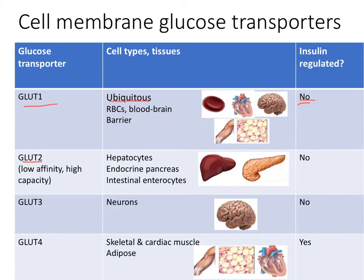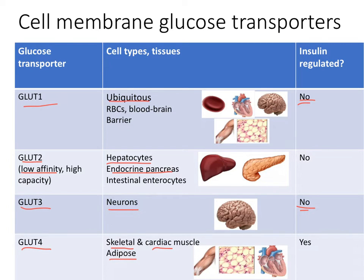GLUT2 is particularly expressed in cell types that are important for regulating blood glucose, such as hepatocytes, the endocrine pancreas like pancreatic beta cells, as well as the intestinal enterocytes. It has a low affinity for glucose, meaning that only when blood glucose levels are very high do large amounts of glucose enter these cell types. GLUT3 is specific to neurons — sperm also have GLUT3 — and again, this is not insulin regulated. GLUT4 is specific for skeletal muscle, cardiac muscle, and adipose, and it is the only insulin-regulated glucose transporter.